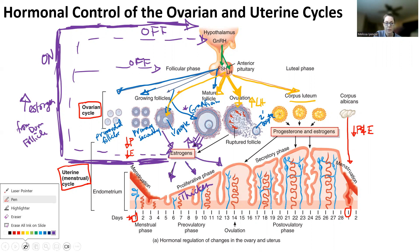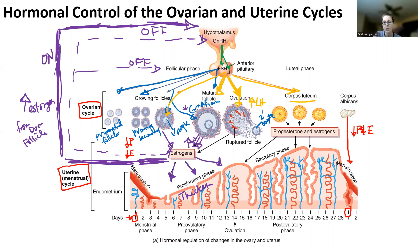The corpus luteum is really going to make sure everything turns off again. The corpus luteum gets created, and what ends up happening is it's no longer going to target the ovary with its hormones. Instead, it's going to target the endometrial lining. The corpus luteum makes progesterone and estrogen at higher quantities.